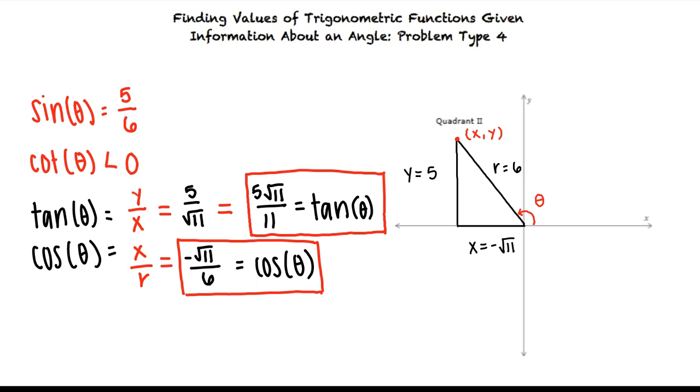Okay so to find values of trigonometric functions given information about an angle we first determine which quadrant the angle lies in. We then draw a triangle to help us solve the problem and we use our knowledge of trig functions and Pythagorean theorem to find the value of the missing side. From here we can substitute the values from our triangle into the desired trig equations to find our answers. That's exactly right. Great work!